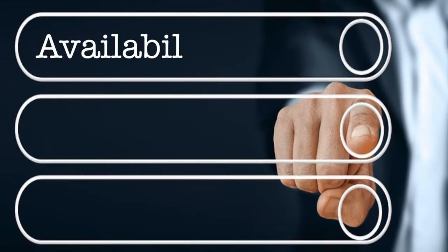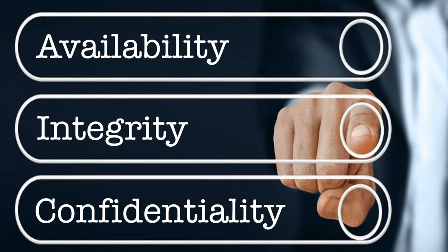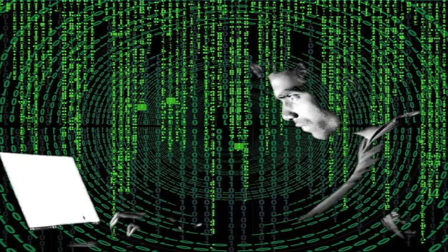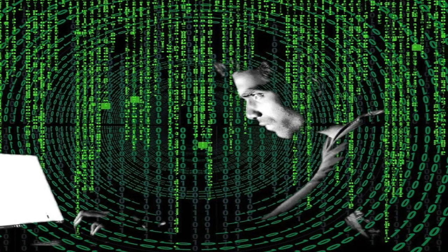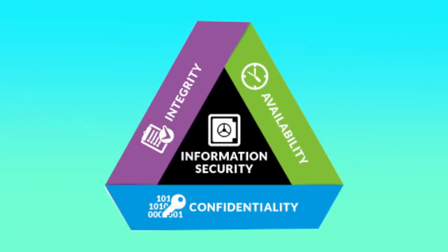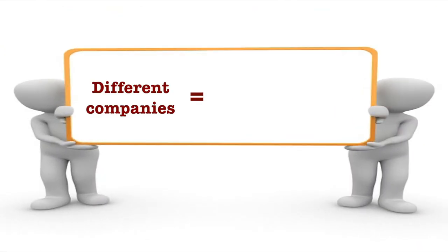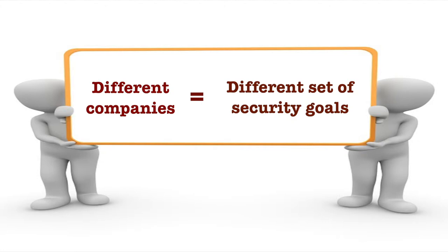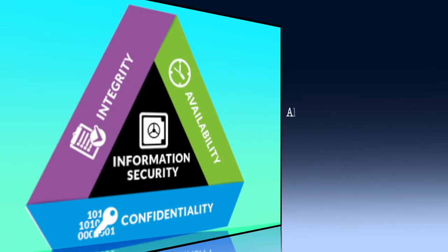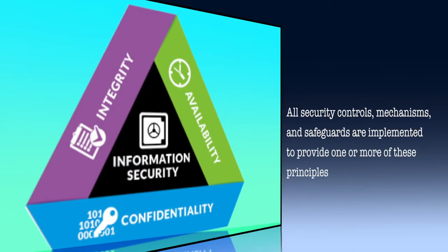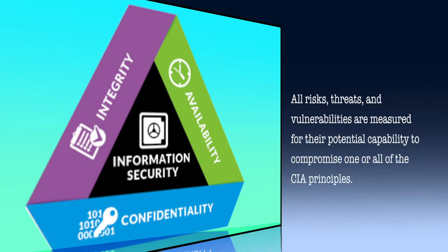The three fundamental principles of security are availability, integrity and confidentiality, commonly referred to as the CIA triad, which also forms the main objective of any security program. The level of security required to accomplish these principles differs per company because each has its own unique combination of business and security goals and requirements. All security controls, mechanisms and safeguards are implemented to provide one or more of these principles, and all risks, threats and vulnerabilities are measured for their potential capability to compromise one or all of the CIA principles.